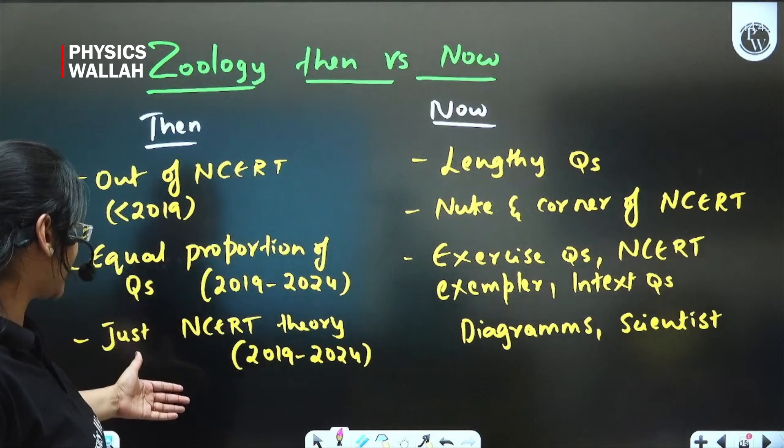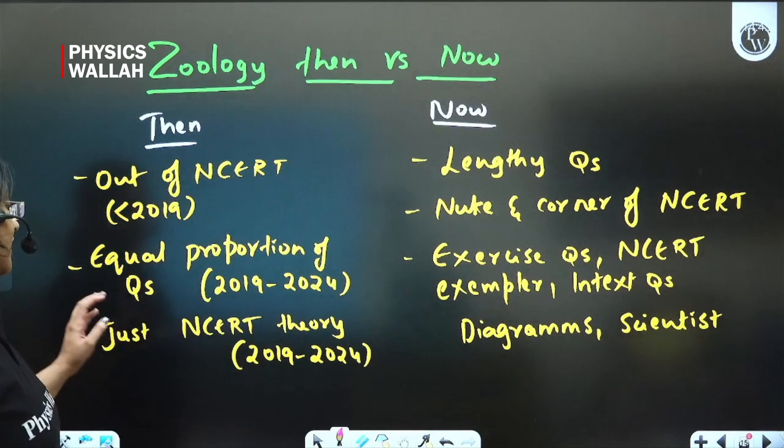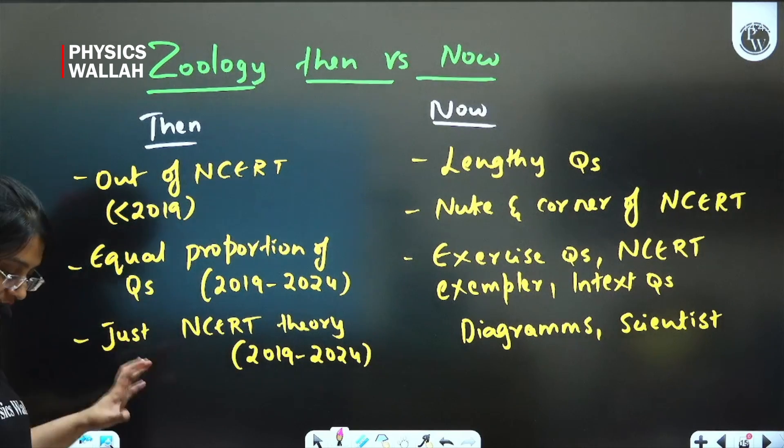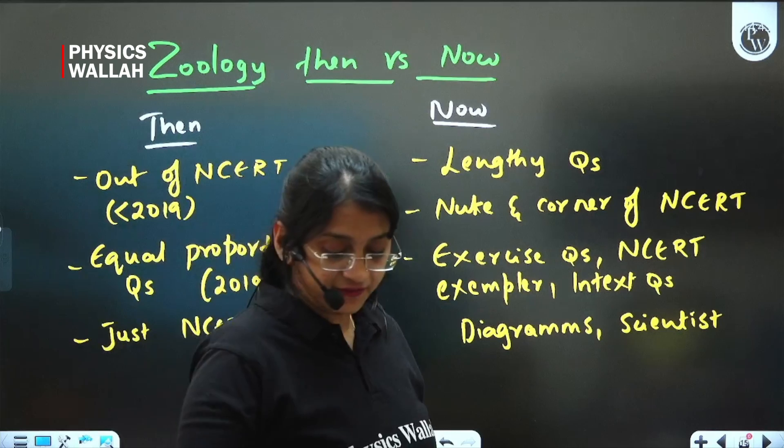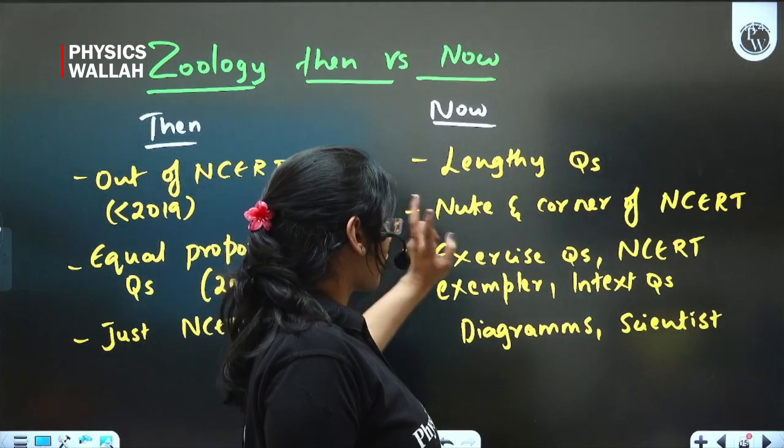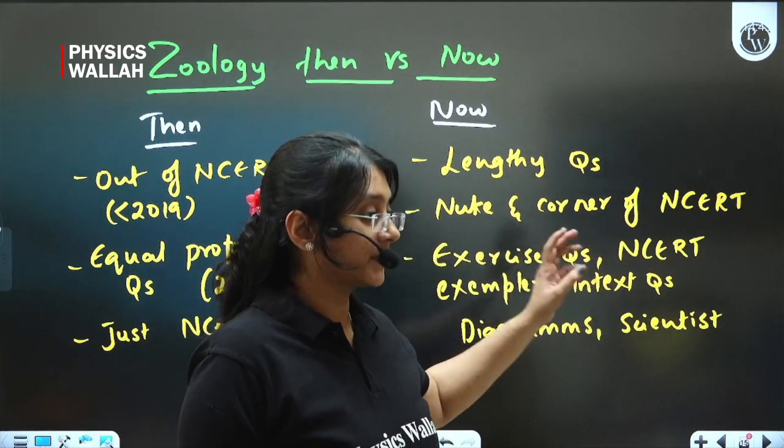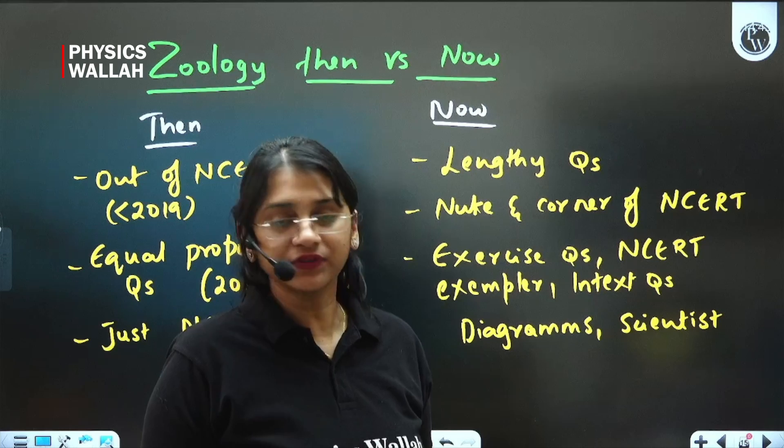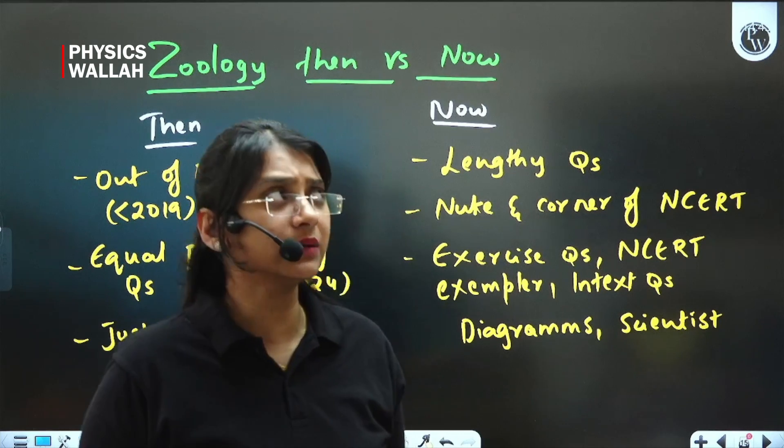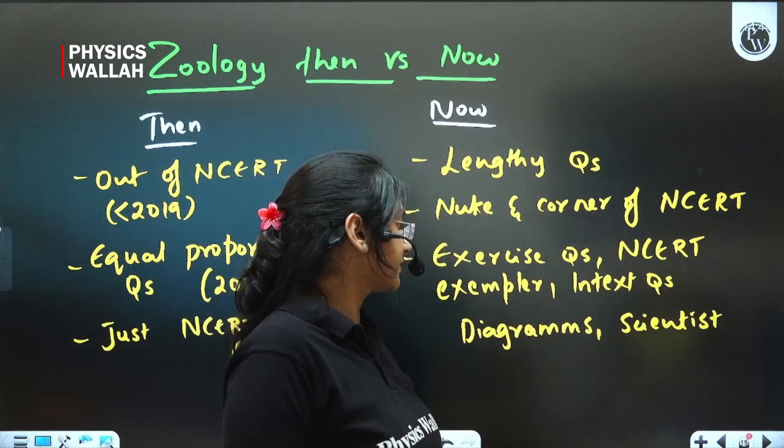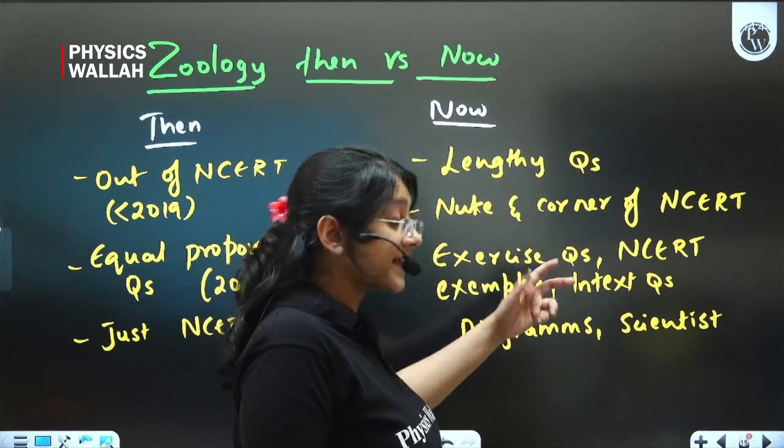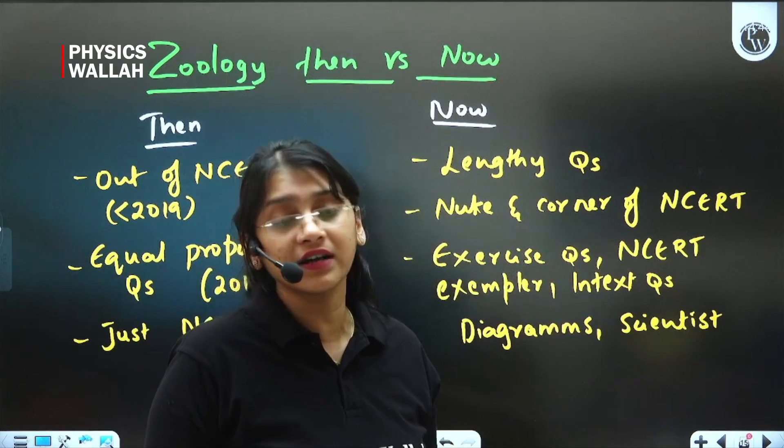From 2019 to 2024, there were equal proportions of questions in biology as well as zoology. There were more match the following questions and equal amount of statement-based questions. But this year, NEET 2025, more lengthy questions were asked. So you have to prepare for the same. Also, from 2019 to 2024, questions usually came mostly from NCERT theory. But this year, NEET 2025, questions came from exercise questions. Few things were not out of NCERT, but something was there inside NCERT and very few things were out.